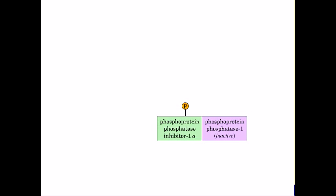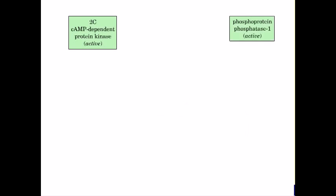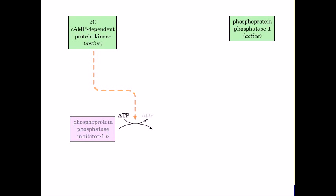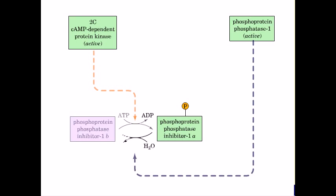Phosphoprotein phosphatase 1 is inactivated by the binding of phosphoprotein phosphatase inhibitor 1. The inactive form of phosphoprotein phosphatase inhibitor 1 is activated through phosphorylation by cyclic AMP-dependent protein kinase and ATP. Conversely, phosphoprotein phosphatase inhibitor 1 is inactivated through dephosphorylation by phosphoprotein phosphatase 1 — so dephosphorylating it inactivates it, while phosphorylating it activates it.